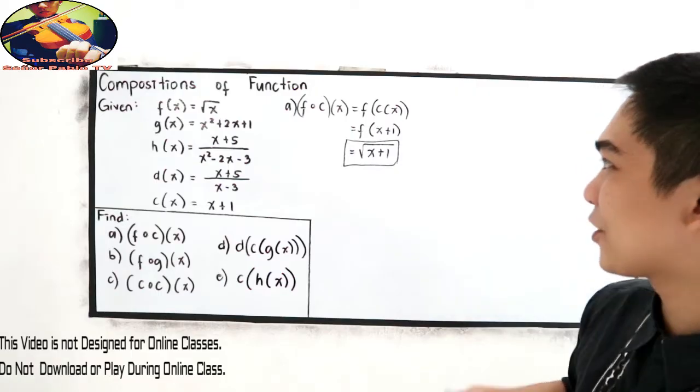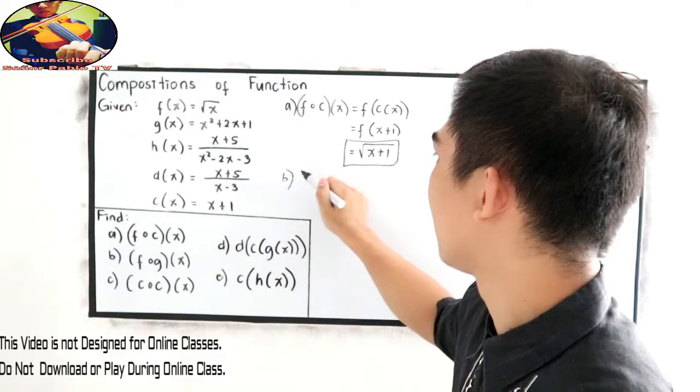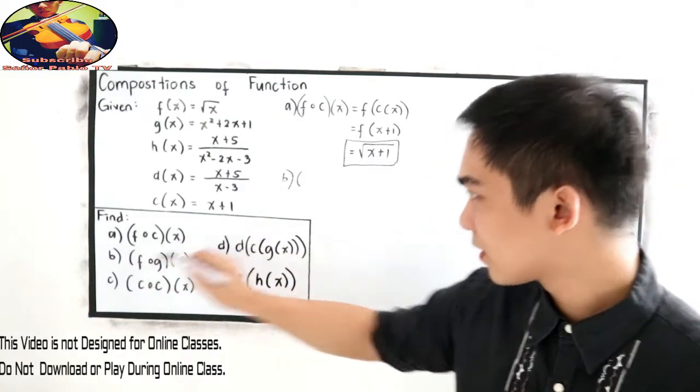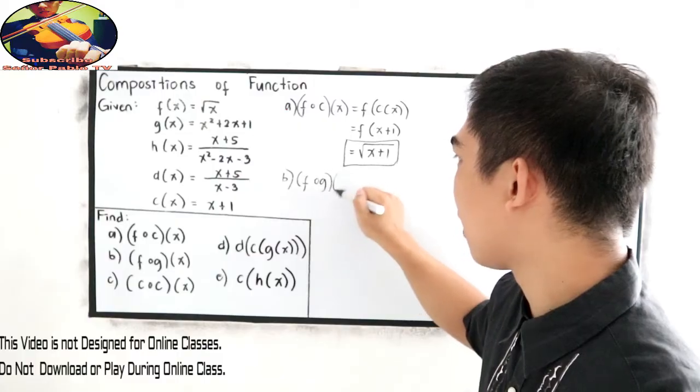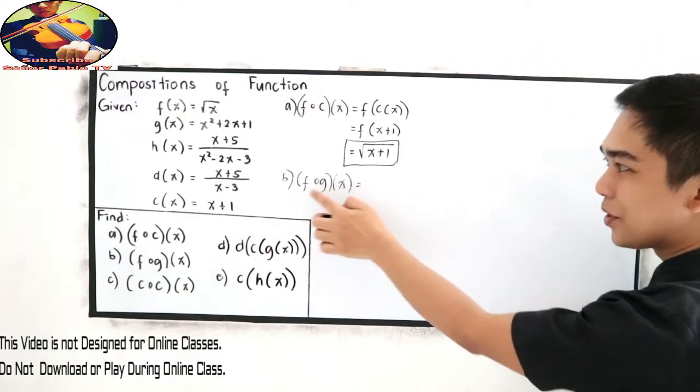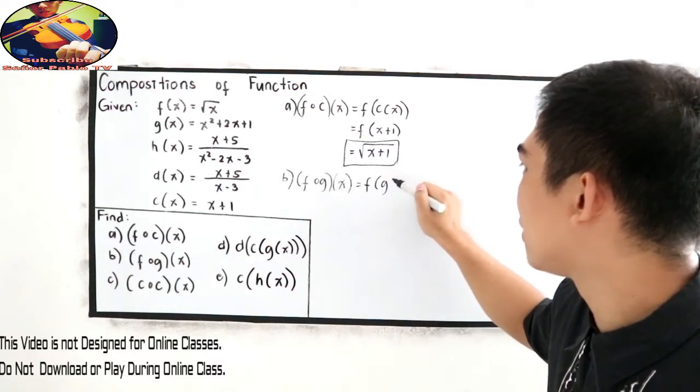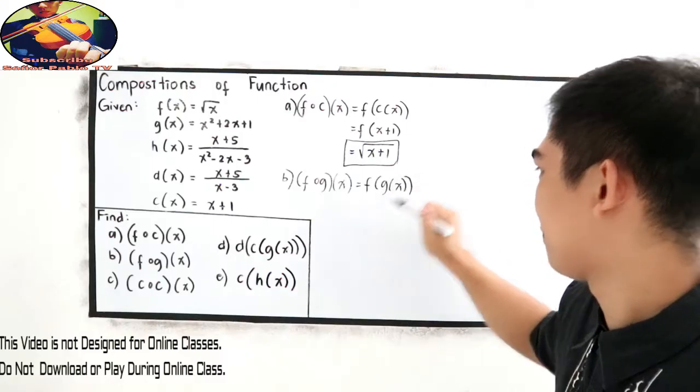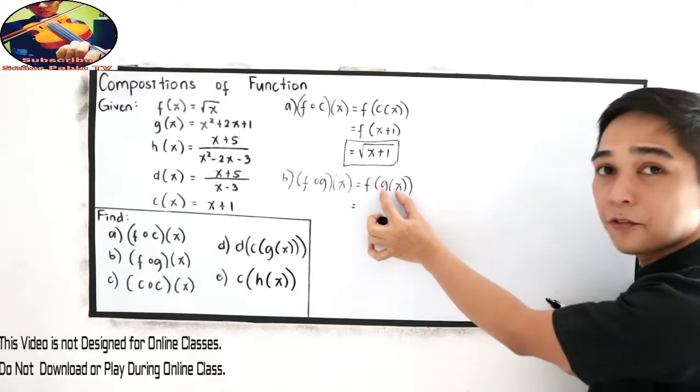Next, letter b. Letter b is f composed of g of x. We know that the equivalent of that is f of g of x. So we are going to find g of x first.